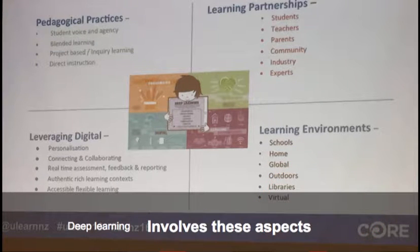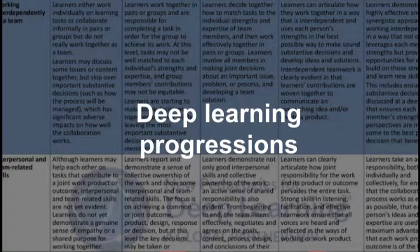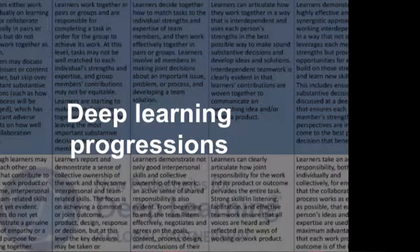This slide shows the factors which Fullan says help teachers reflect on their choice of activities for deep learning to take place. Fullan works with teachers to assess each one of these factors which allow deep learning, using progressions for each of these skill sets, and an example is shown in this slide. It is clear from this work that Twitter affords the conditions necessary for deep learning to take place.